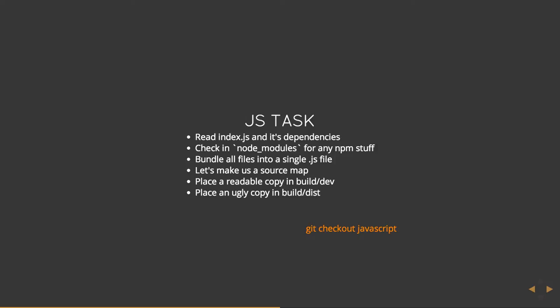First task is our JavaScript task. As we outlined at the beginning, we're going to read an entry point — in this case the index.js file — and it's going to get all those dependencies and build us a single JavaScript file. We're going to check node_modules for any NPM stuff. If you're not familiar with NPM, it's a package manager for JavaScript. We're going to bundle that into a single JavaScript file. Source maps — we're going to make a source map too, so it points back into the code where the source came from, making it easier to debug. We'll place a human-readable version in the build dev folder and an uglified copy in the build dist folder, essentially synonymous with production.